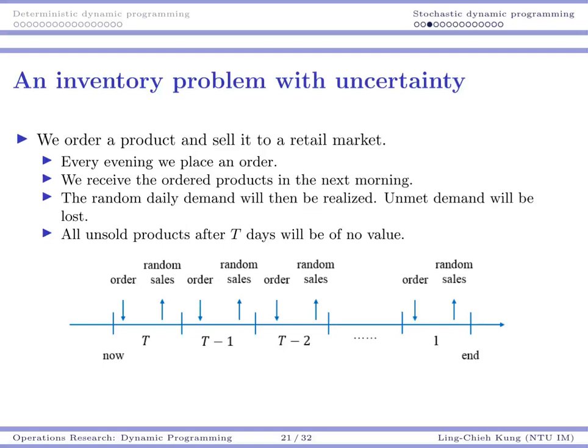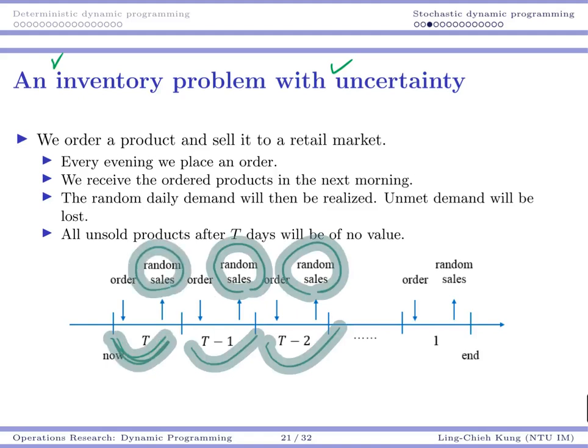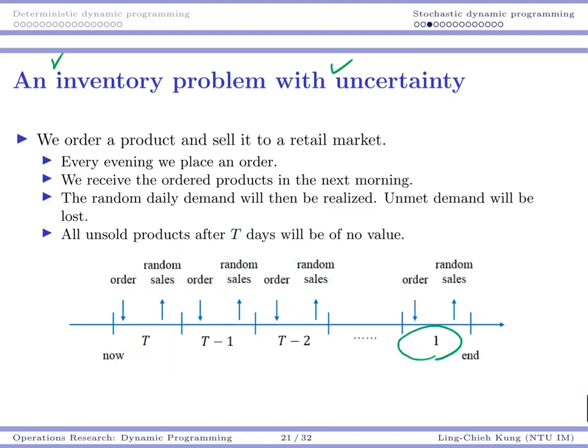Let's see the example. We have an inventory problem with uncertainty. That basically means the random sales or random demand is uncertain. We still have T periods. We start at period T and then move to period T-1, T-2, and so on. The last day is period one.